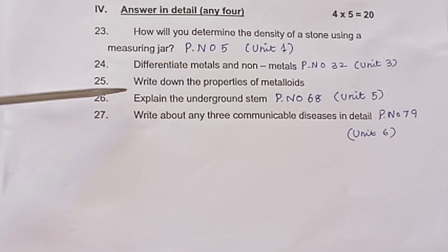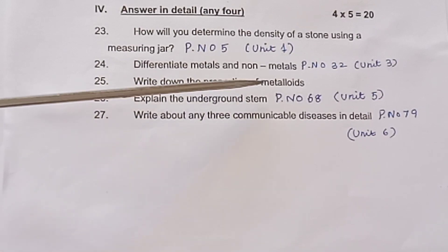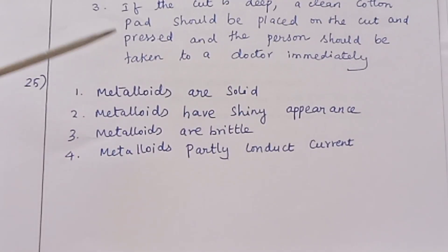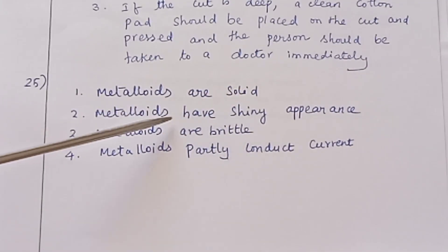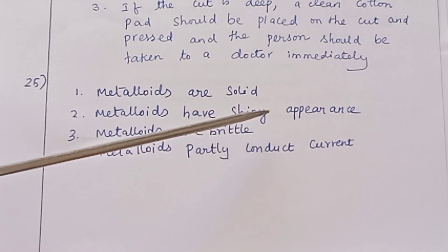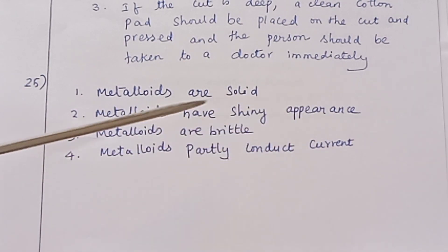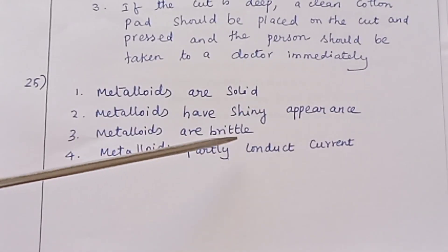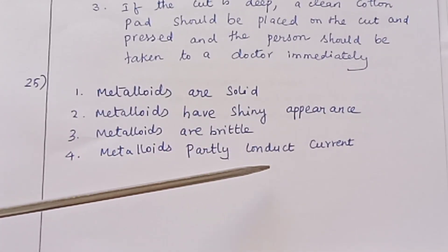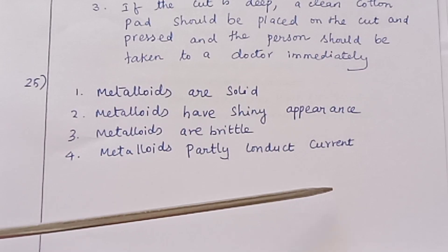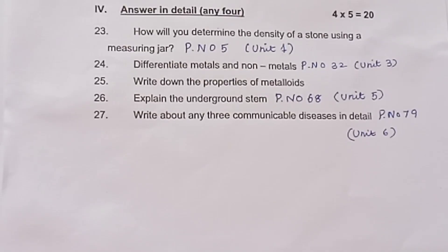Question 25: Write down the properties of metalloids. Answer: Metalloids are solid. Metalloids have a shiny appearance. Metalloids are brittle. Metalloids partly conduct electric current.